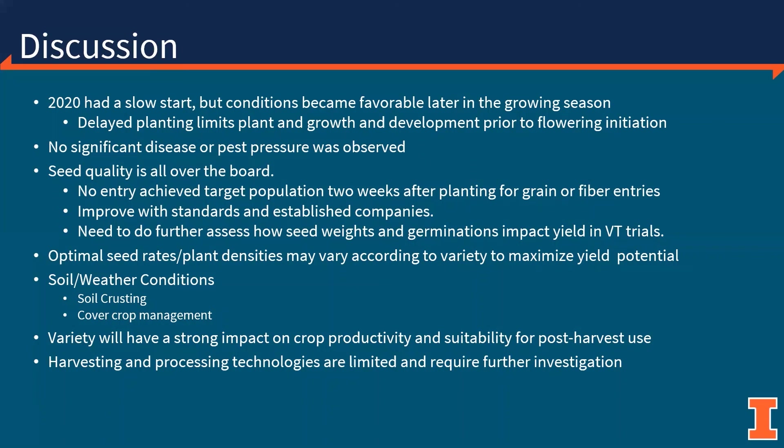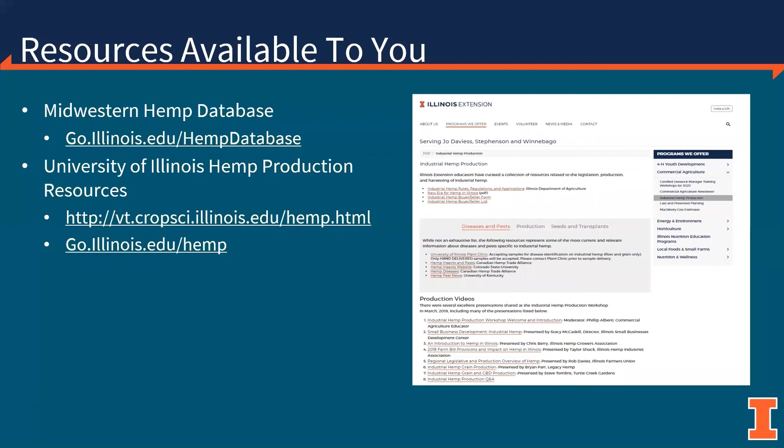Variety, photoperiodicity, site suitability, end use, and the interactions of these factors will have a strong impact on crop productivity. The harvest and processing technologies needed to optimize the plant's value are limited or lacking in the United States, and building markets for these products will be a critical part of hemp's development into a useful agronomic crop. All the resources discussed here today are available at our various websites, with particular interest going to our University of Illinois hemp webpages which have the results of the variety trials as well as the Midwestern Hemp Database page, and at go.illinois.edu/hemp.